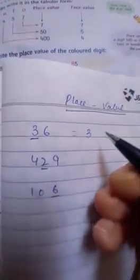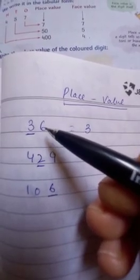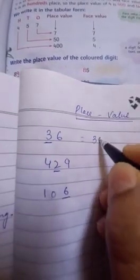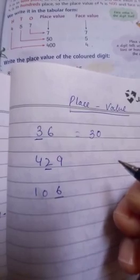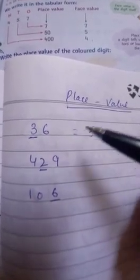Now, what is the place value of 3? See, write down 3. Write down 3. Now, how many digits are after 3? It's only one digit. So, you are going to add only one zero to it. Now, what is the place value of 3? It is 30.